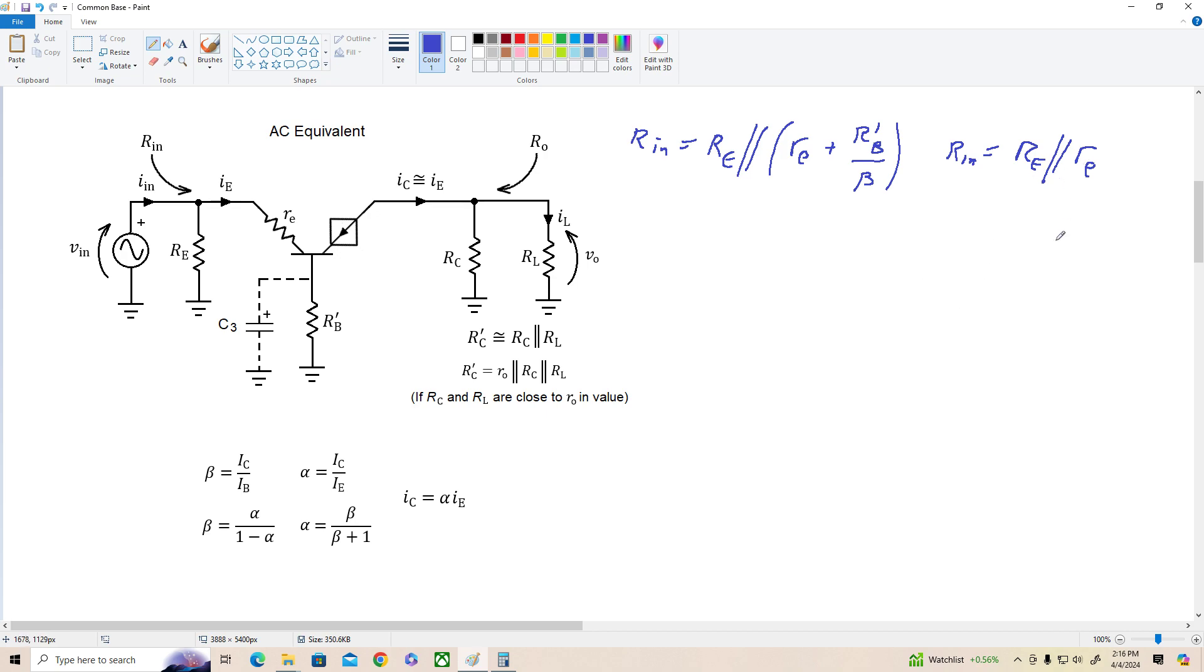Now, what we want to do next is determine the voltage gain, but to do that, I have to determine the emitter current that's caused by Vn, and that would be I sub E equals Vn divided by the resistance looking into the emitter, and let's use this version for right now, little re plus R prime B over beta.